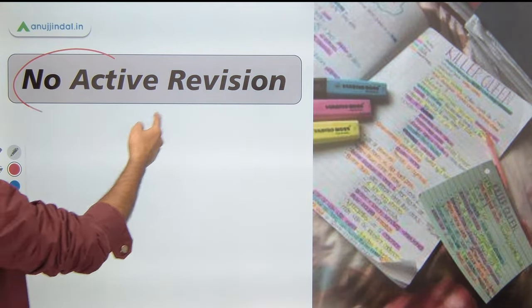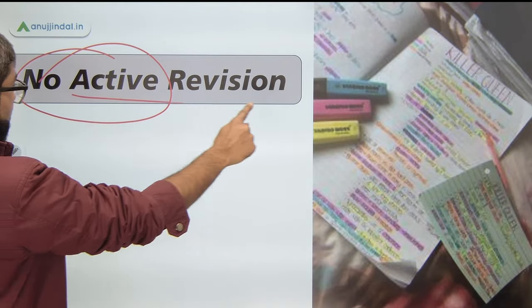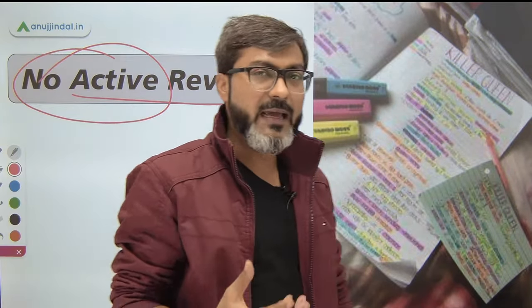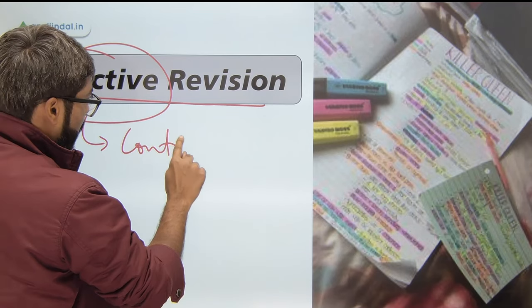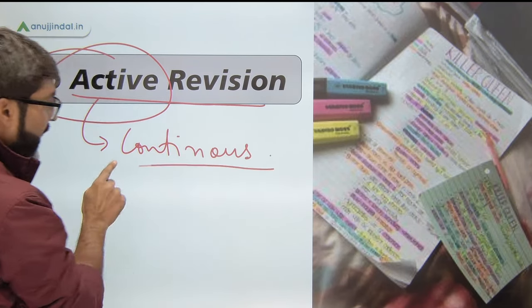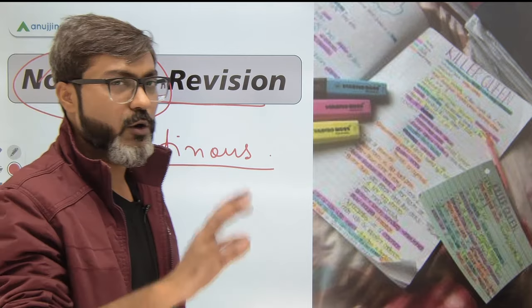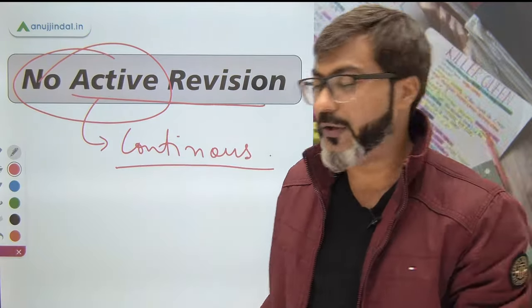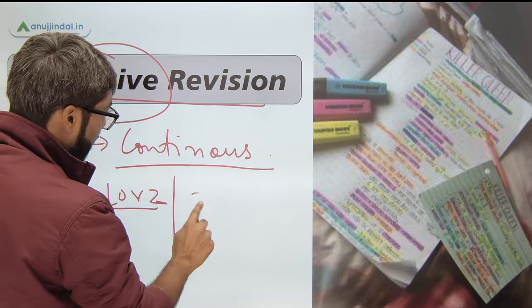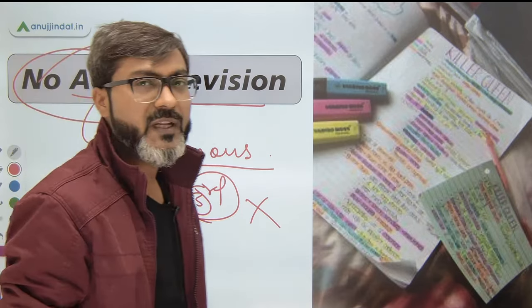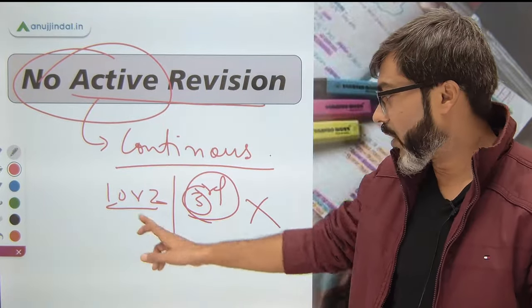The first mistake you must be making is you are not doing active revision. You may say you are doing revision, but read the word properly — active revision. Active revision means continuous revision. Most of you are studying for one or two entire months and then giving the entire third month for revision. This is the incorrect way of revision — do not follow this method.